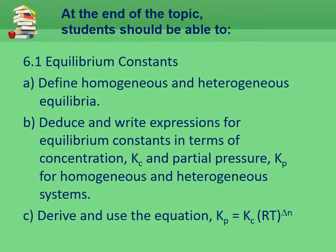We have to define what is homogeneous and heterogeneous equilibria, deduce and write expressions for constant Kc and Kp, and derive the equation Kp equals to Kc times RT to the power of delta N.